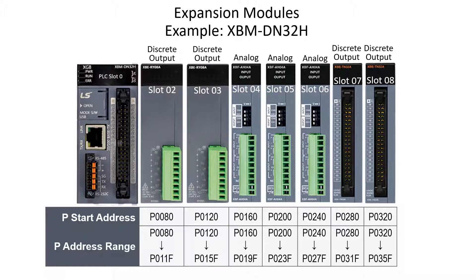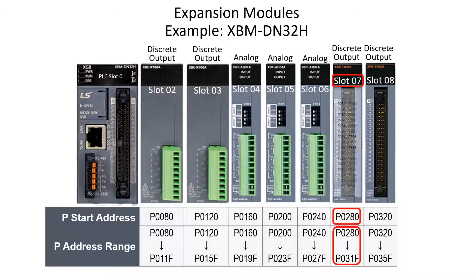A 32-point digital output module is configured in slot 7. The starting address is P-Word 28 bit 0 and the range is P28 0 through P31 F. The 32 output points are addressed P28 0 through P29 F.